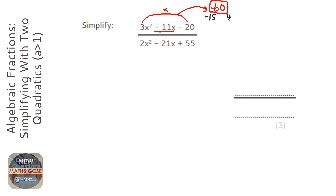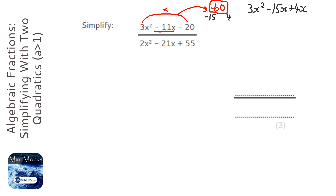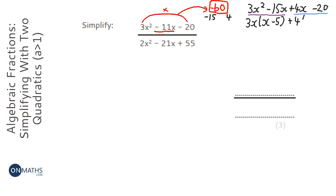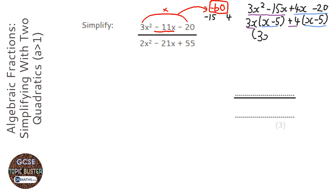The next step is we rewrite the quadratic, but instead of minus 11x, we write minus 15x plus 4x, and minus 20. If you don't understand any of this, please look at our videos on factorising quadratics, which go into this in a little bit more detail. So we divide out the 3x, leaving x minus 5, and divide out the 4, giving 4 brackets x minus 5. Then we put the repeating bracket and leftover pieces together, giving us 3x plus 4 and the repeating bracket.